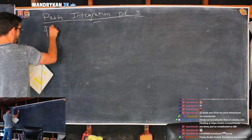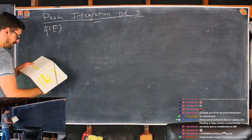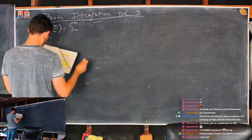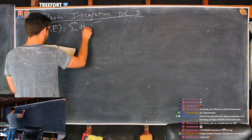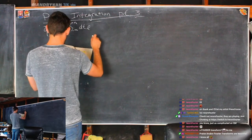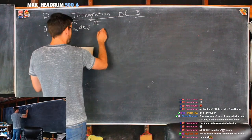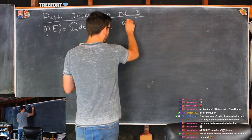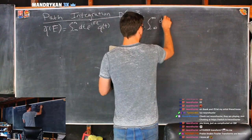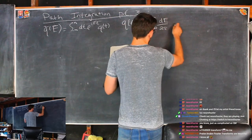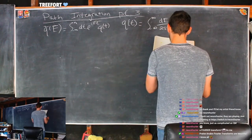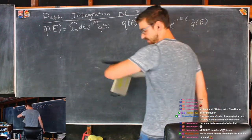We want to get out of time and into energy. The Fourier transform will go as follows: Q tilde as a function of energy E is given by the integral from negative infinity to positive infinity of DT times e to the iEt times Q of t. And Q of t is given by the integral of DE over two pi times e to the minus iEt times Q tilde of E.